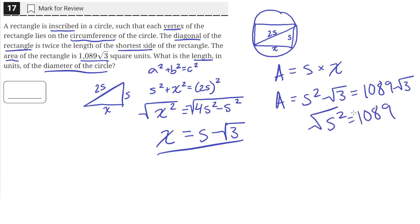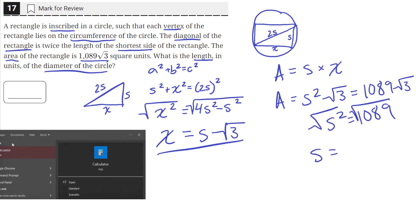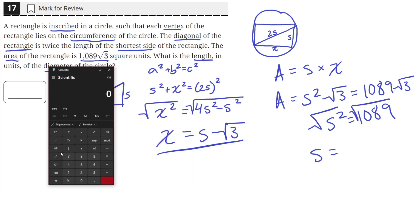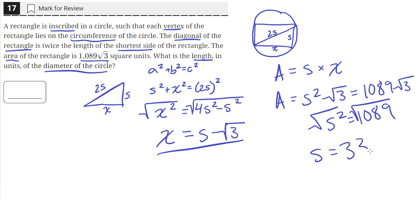Then we can take the square root of both sides to get rid of this exponent, so we'll be left with s equals the square root of 1089. We can raise 1089 to the 0.5 power, which is the same thing as taking the square root. The square root of 1089 is 33.